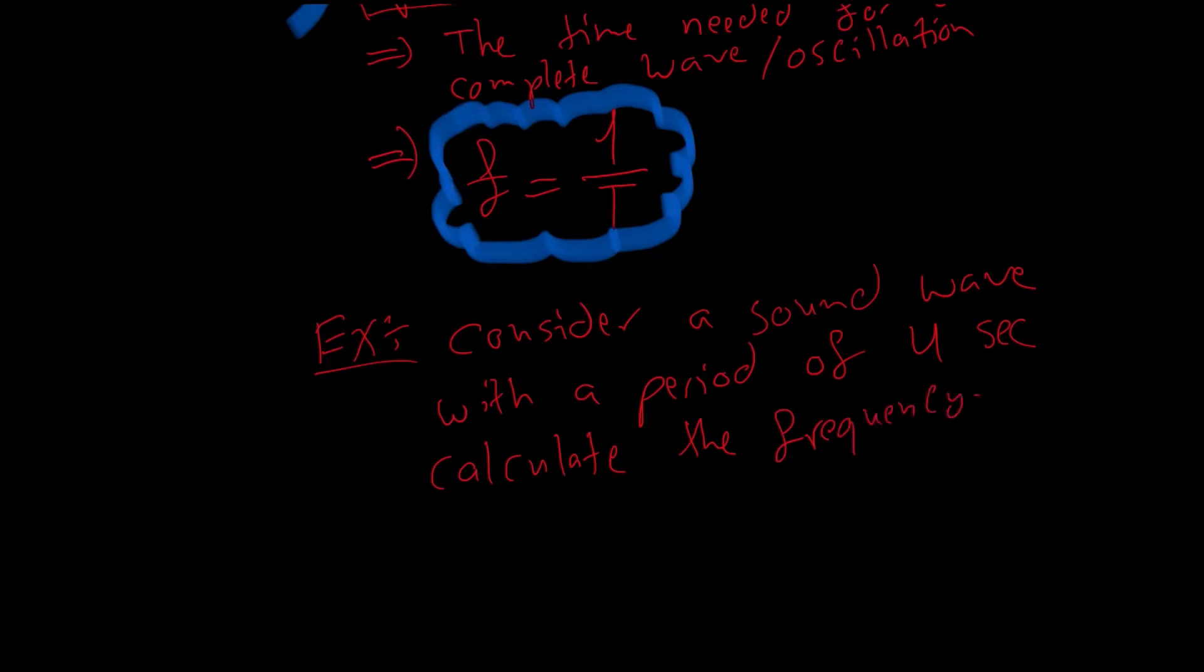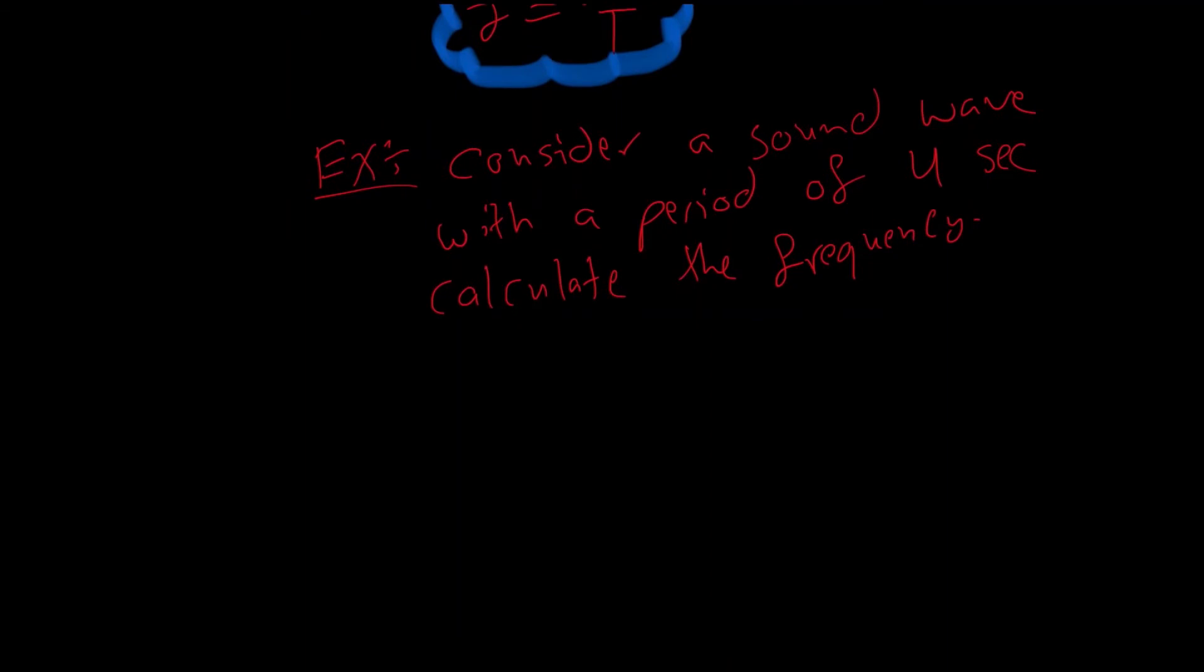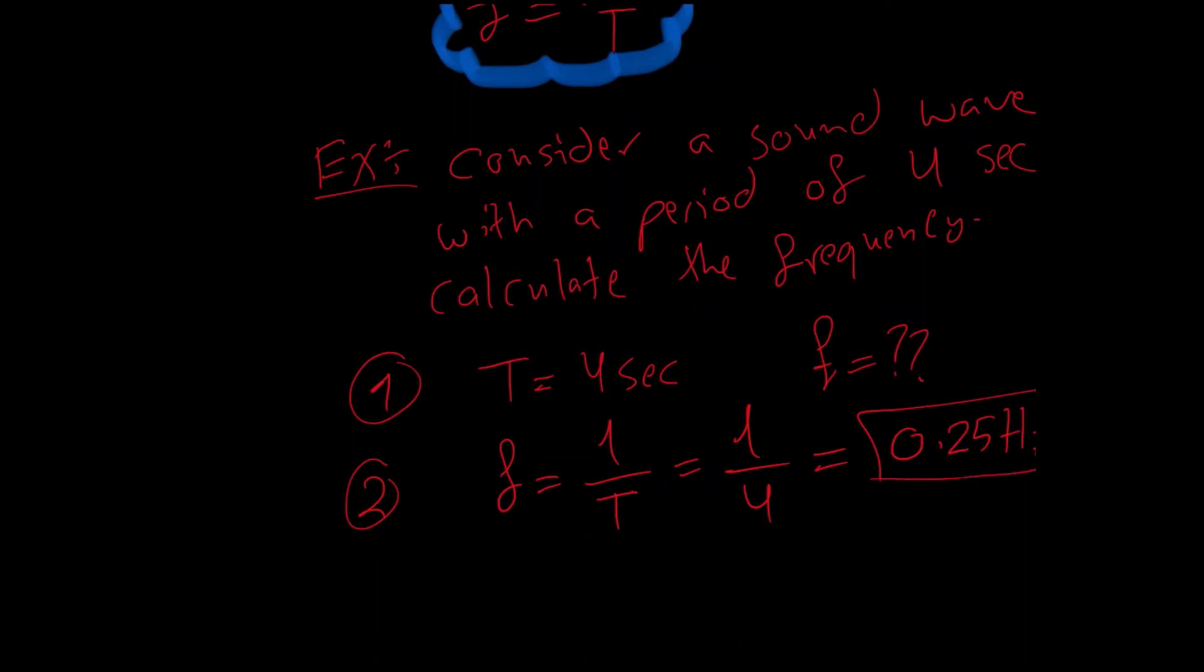The first thing that you need to do always in any physics problem is always indicate what you have and what you're looking for. Step number one, what do I have? I have my period which is four seconds. What is my unknown? It's my frequency. Step number two, do I have a relationship that I can relate frequency and period? Yes, I do, which is the formula frequency equals to one over T. Substituting now the unknowns and the knowns, one over four equals to 0.25 hertz.